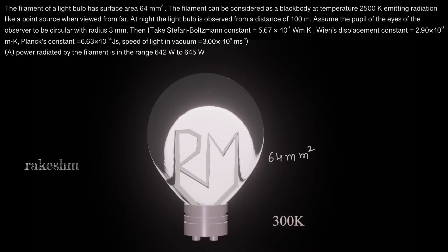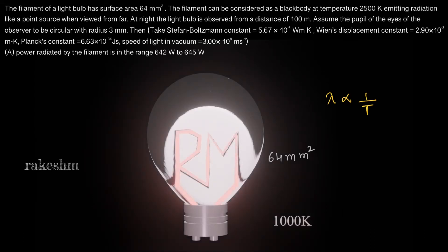Let us now pass current and take it up to 2500 Kelvin, increasing the temperature of the filament in incremental steps. We know from Wien's displacement law that lambda is inversely proportional to T. So as we are increasing the temperature, I want you to notice the color of the filament. Let us first increase the temperature of this filament to 1000 Kelvin.